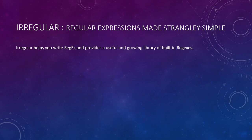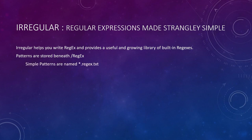Irregular will help you write regex and provides a useful and growing library of built-in regexes. At this point just over 75, but growing at least a couple a month. Patterns are stored in Irregular or any module beneath the regex subfolder. You can have a simple pattern named like digits.regex.txt, and that will have the contents of the regular expression with ignore case and ignore pattern whitespace options turned on. That last one allows you to comment the regexes, so most of them are commented, which can help you understand what they're doing.